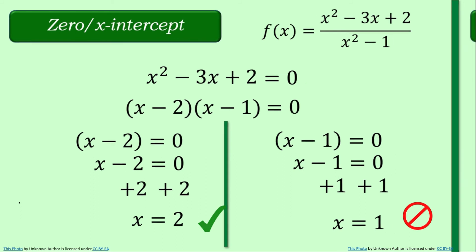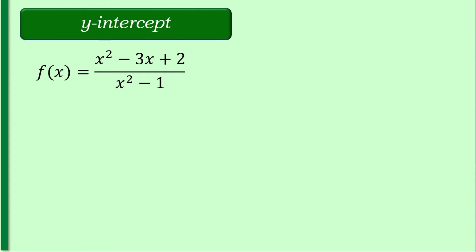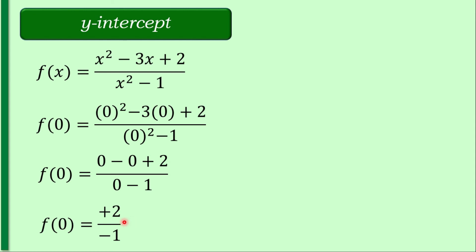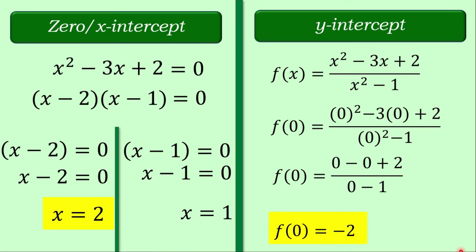How about the y-intercept? To solve for it, substitute x with zero in the rational function. Performing the indicated operation, we get 0 minus 0 plus 2 over 0 minus 1, which gives positive 2 divided by negative 1. So f(0) is equal to negative 2. Our y-intercept is y is equal to negative 2.